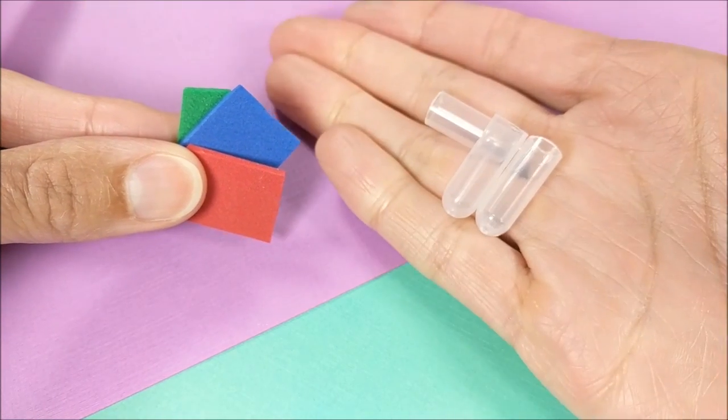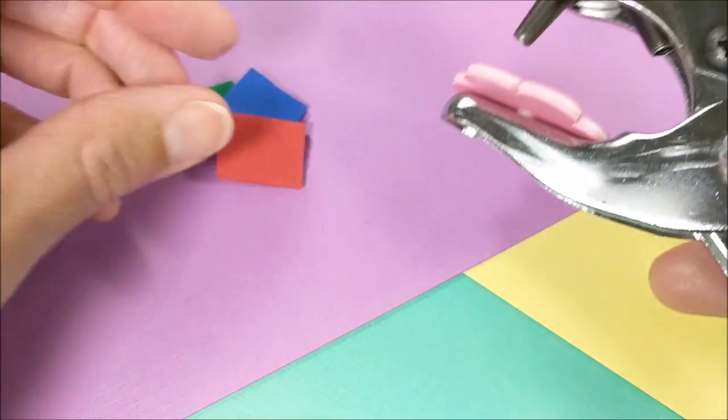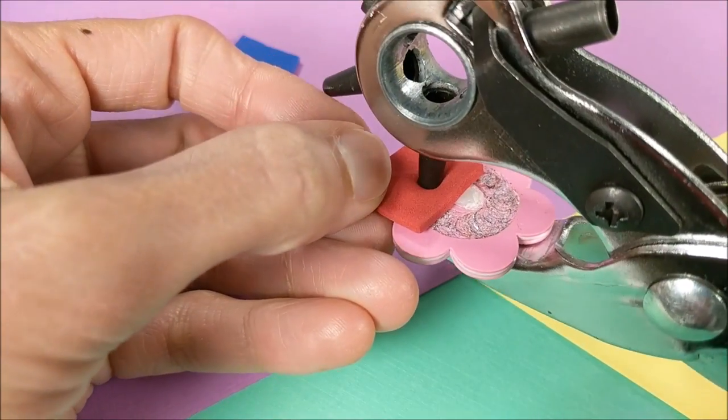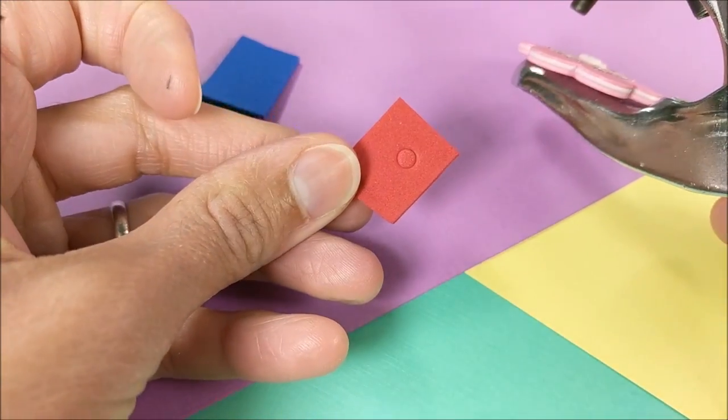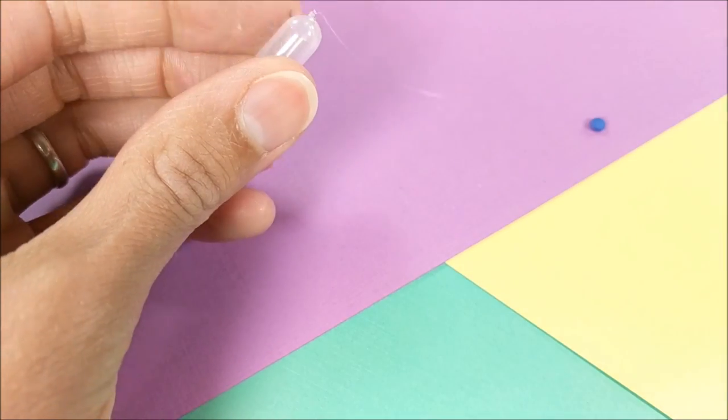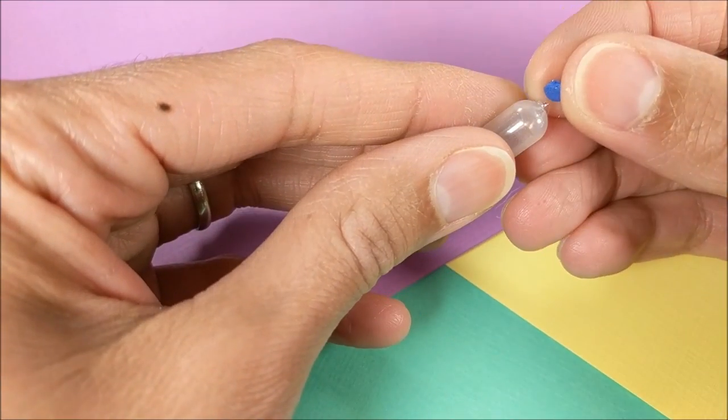And for the lids, I'm just using thick craft foam paper and medium setting on my multi-hole punch. Again, hot glue it to the top, which will also seal that tiny little hole.